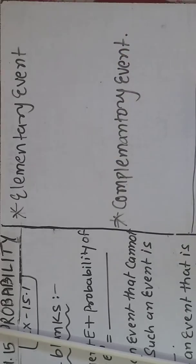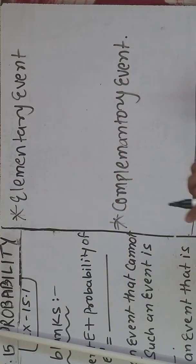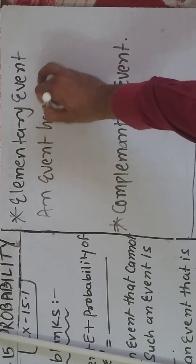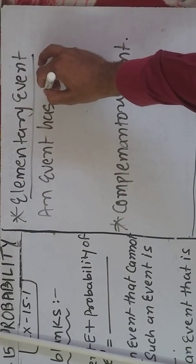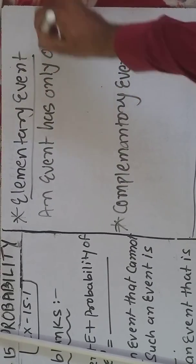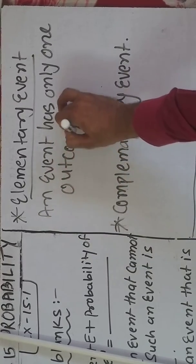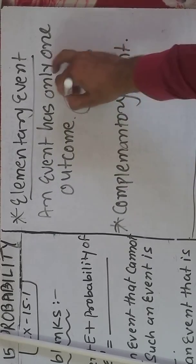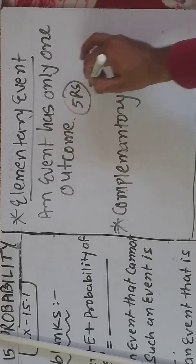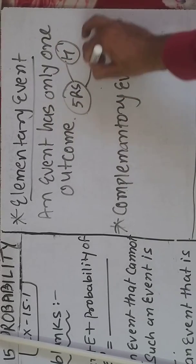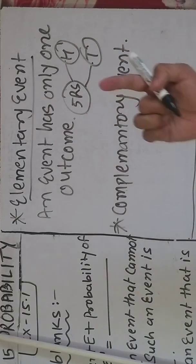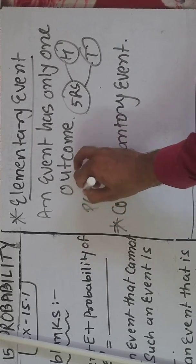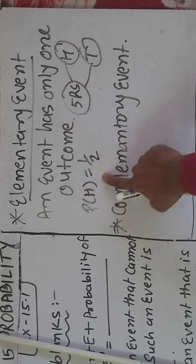What is the elementary event? An event has only one outcome. For example, last time we took a coin — the coin had two outcomes: head or tail. So the chance of getting head is only one outcome, and the probability of head is 1 by 2. That is called an elementary event.